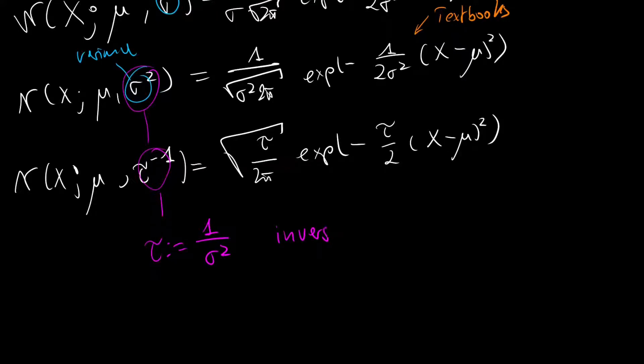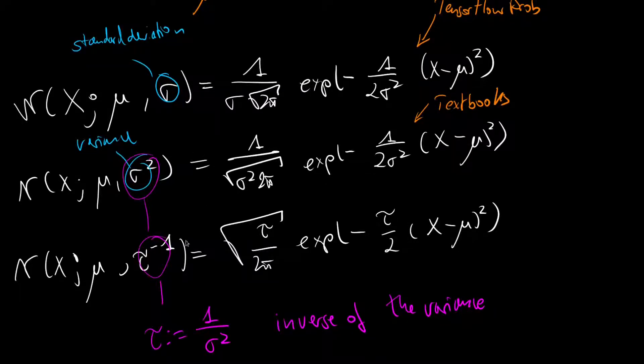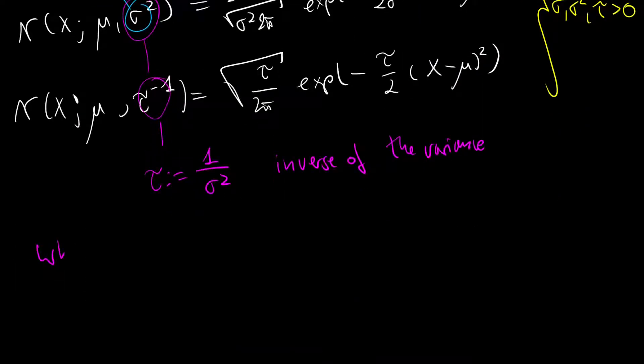So it is the inverse of the variance, and surely if it is the inverse then it adheres to all the properties that the standard deviation and the variance also have to fulfill, which is that all of them—so sigma, sigma squared, and tau—have to be greater than 0. And you can ask yourself why do we do this?